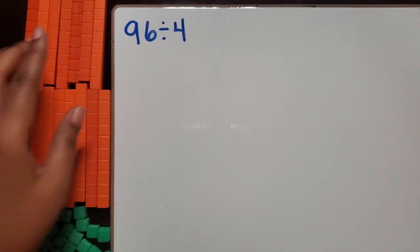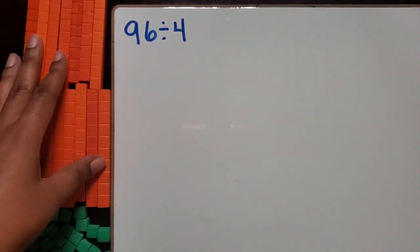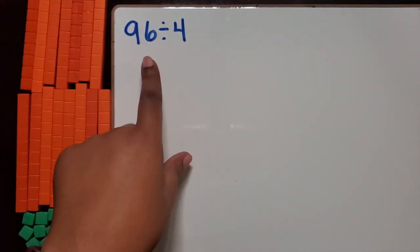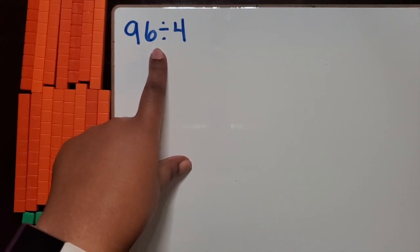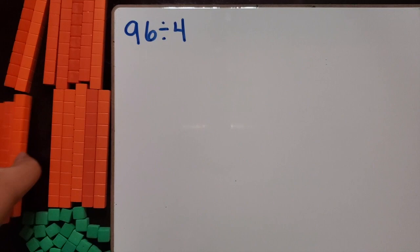So the first thing you want them to do is to build their 96 using the base 10 blocks. You want them to recognize that in 96 there are 9 tens and 6 ones. So we're going to count out 9 tens.